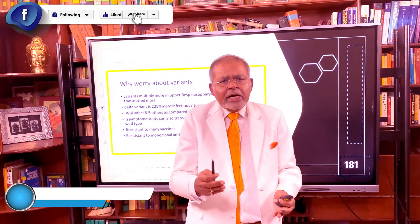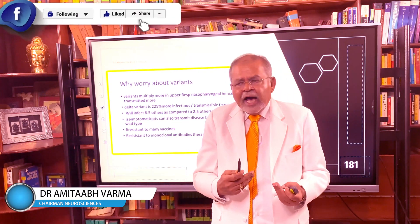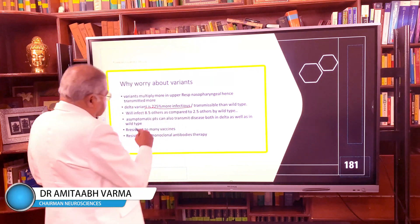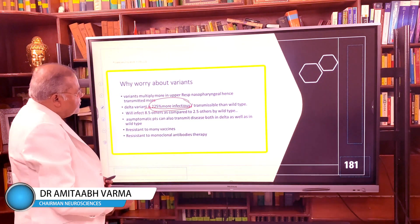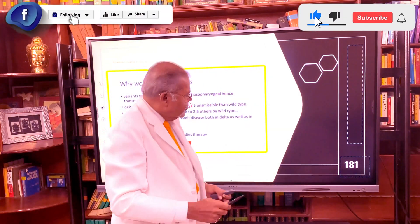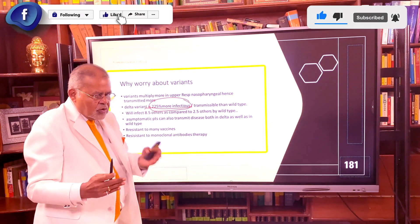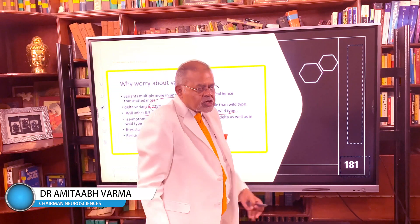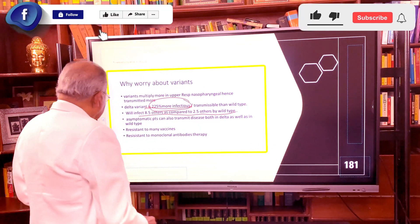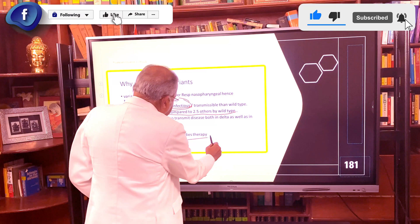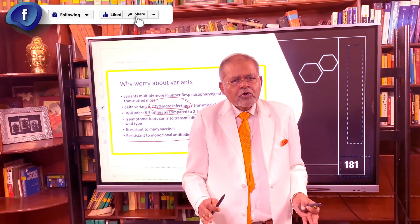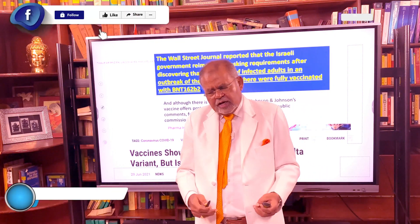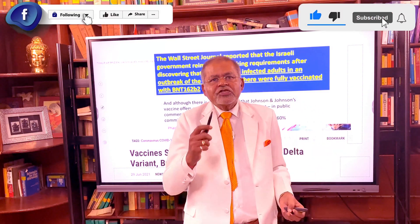Variants are concerning because they multiply more in the upper respiratory and nasal area, making them more transmissible. The Delta variant is 225 times more infectious and transmissible than the wild type — the original Wuhan type. A person with the Delta variant infects 8.5 others on average, compared to 2.5 others with the wild type. It is resistant to monoclonal antibody therapy and to vaccines.